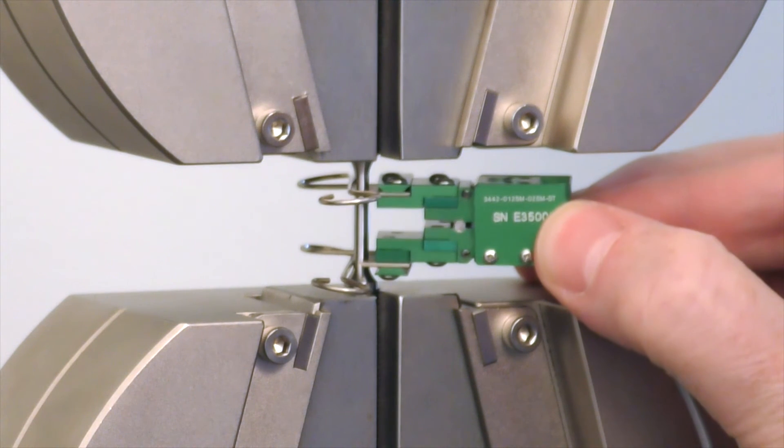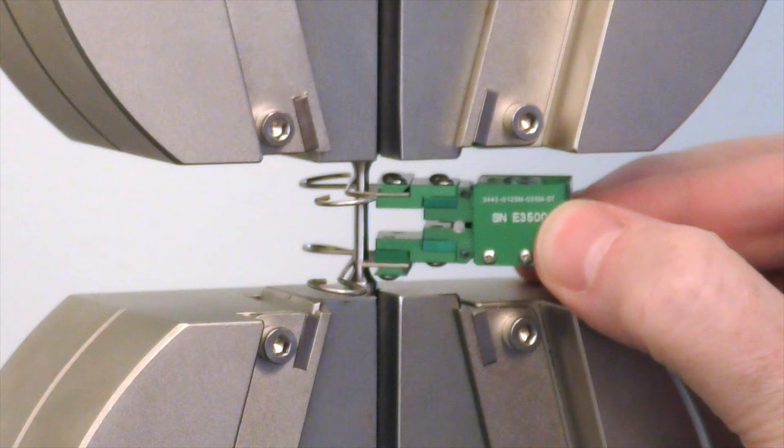Rock the extensometer on the bottom knife edge to allow the extensometer's top arm to rest on the gauge length pin. This sets the gauge length.